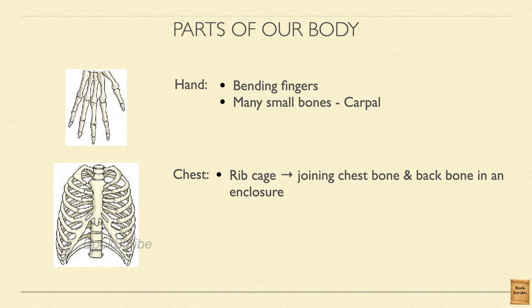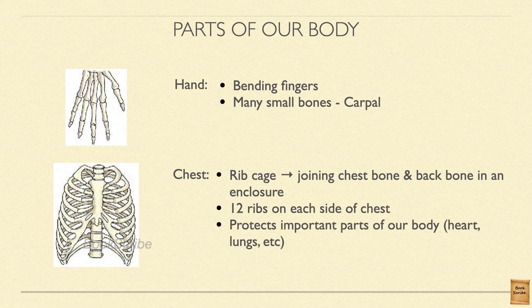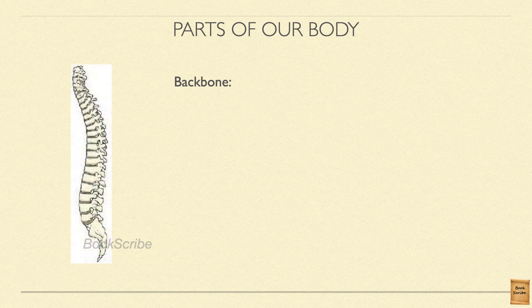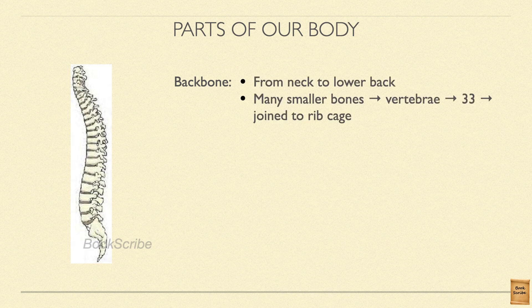There are totally 12 ribs on both sides — 12 on the left side from chest bone to backbone, and 12 on the right side. This entire rib cage is very important because it protects the most important organs of your body: your lungs and your heart. Your backbone is not a single bone — it has small bones called vertebrae. In our backbone, we have totally 33 vertebrae, and our rib cage is joined to these vertebrae bones.